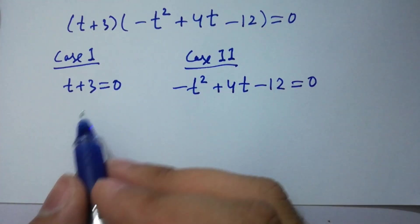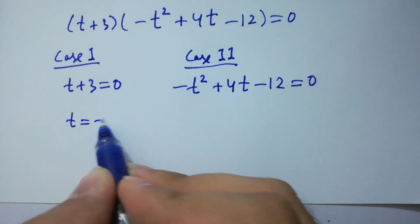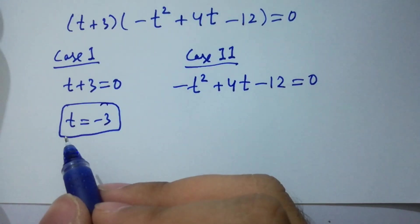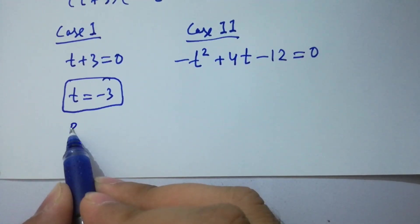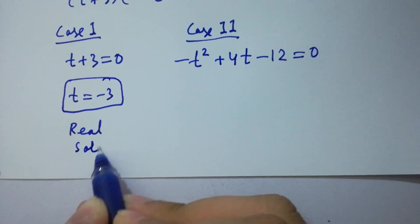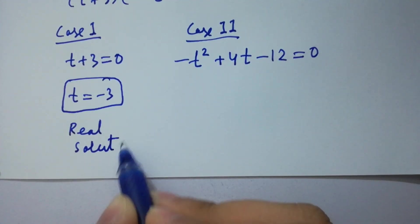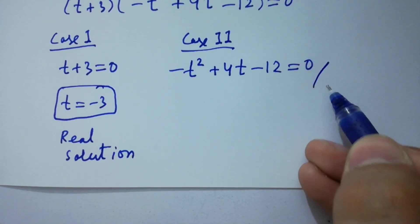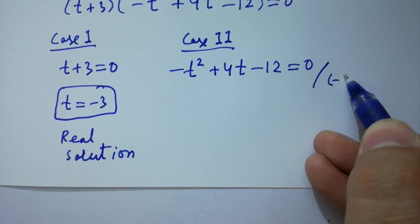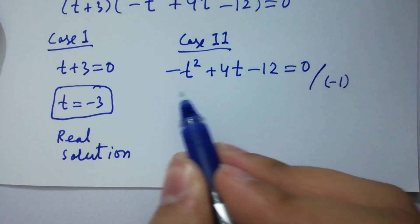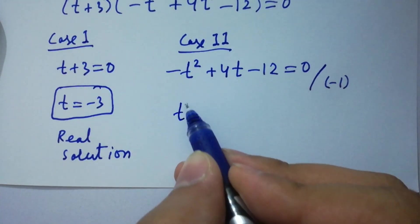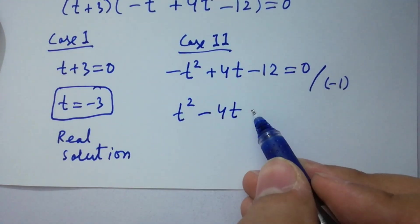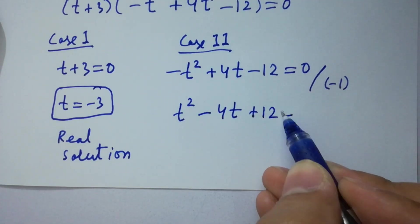From Case 1, t equals minus 3, which is the value of t — our first real solution. From Case 2, divide by minus 1, giving t-squared minus 4t plus 12 equal to 0.